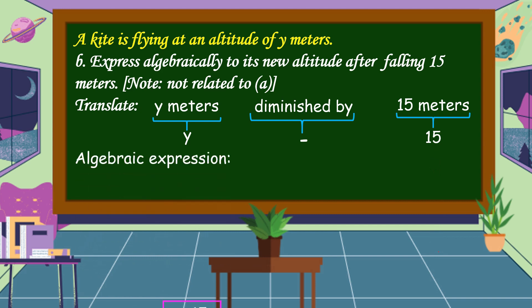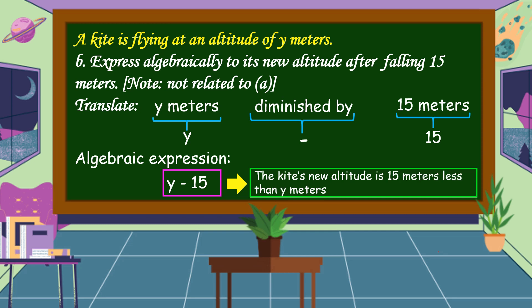This means that the kite's new altitude is 15 meters less than y meters.